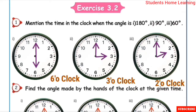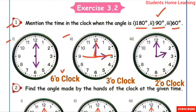Exercise 3.2: Mention the time on the clock when the angle is 180 degrees, 90 degrees, and 60 degrees. First one — 180 degrees is a straight angle. The two lines are straight, so at 6 o'clock this angle is straight. Answer: six o'clock. Second one — 90 degrees is the L-shape. At three o'clock or nine o'clock, the hands form an L-shape.